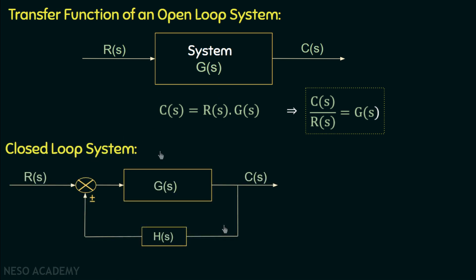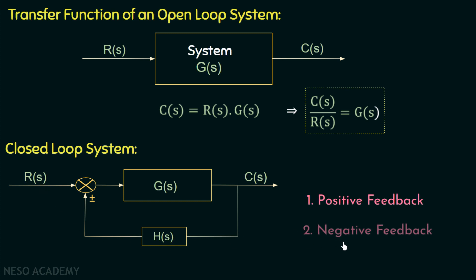If we consider a closed loop system, we have a closed loop system in which the reference input is RS. GS is the forward path transfer function, CS is the controlled output, and there is a feedback element. The feedback element is the differentiating factor between a closed loop system and an open loop system. There are two types of feedback: positive feedback, in which the feedback signal is in phase with the reference input, and negative feedback, in which the feedback signal is 180 degrees out of phase with respect to the input signal. Positive feedback is represented with a positive sign and negative feedback with a negative sign.